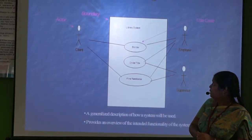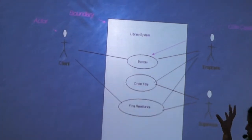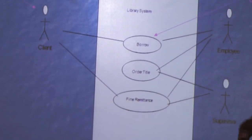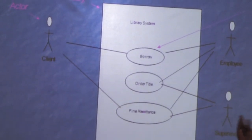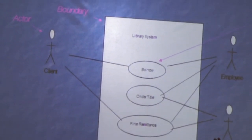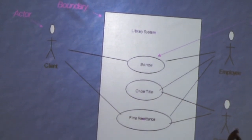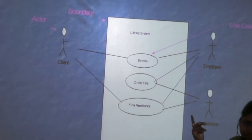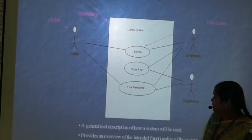Here we are going to see the library system. It shows the boundary between the use case and the actor. What are the use cases? The actions of borrowing, done by the employee as well as the client. The employee who wants to borrow a book will get it from the order title, then find the number entered by the client. This is the sample use case for the library system.